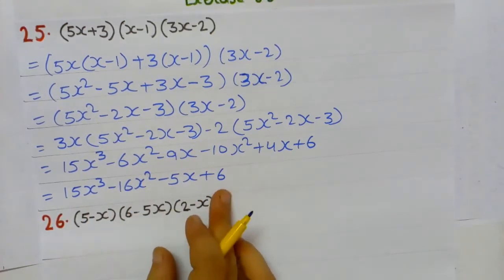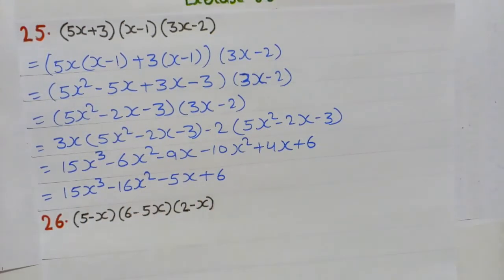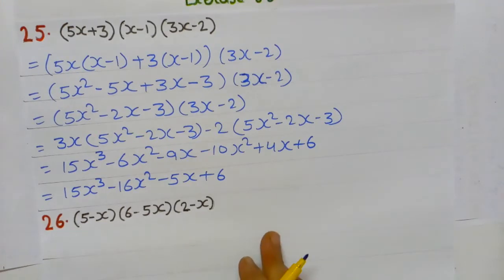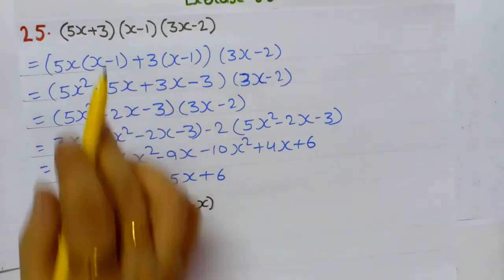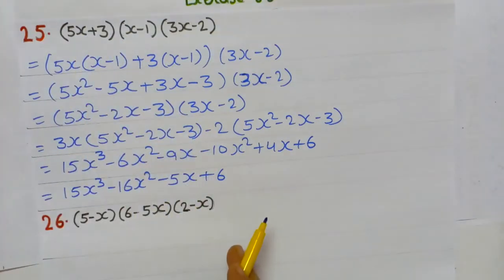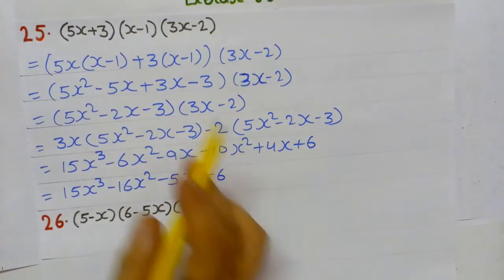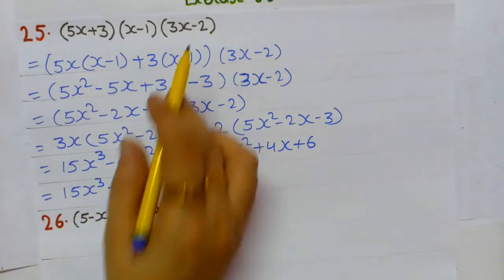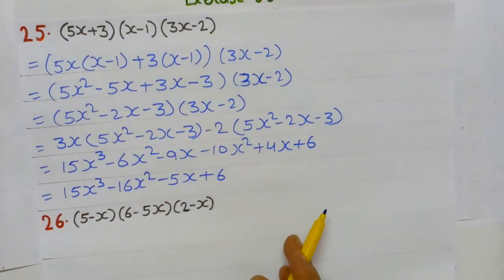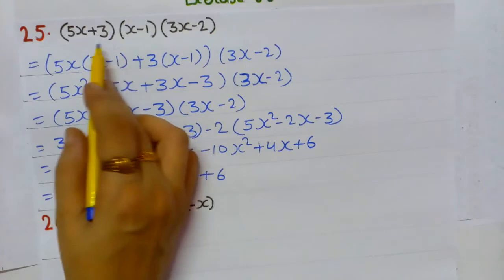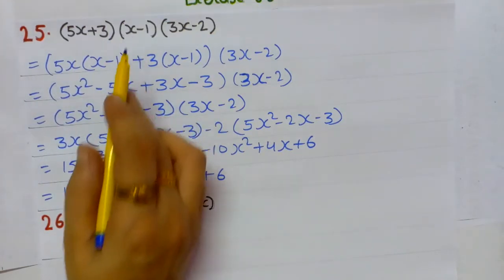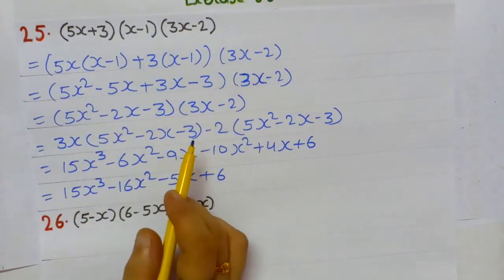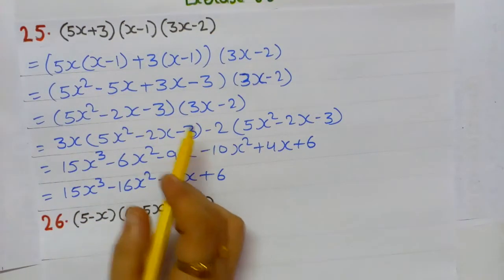So the final answer is 15x³ - 16x² - 5x + 6. To recap: we used associativity of multiplication — first multiplied the 1st and 2nd brackets, then multiplied the result by the 3rd bracket.